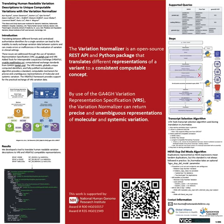The VRS models, globally unique computed identifiers, and fully justified allele normalization algorithm provide a standard computable mechanism for precise and unambiguous representations of molecular and systemic variation. The VRSATILE framework provides support for the practical exchange of VRS variation data. We've developed the Variation Normalizer, an open-source Python package and REST API, to translate human-readable variation descriptions to VRS and VRSATILE compatible representations.